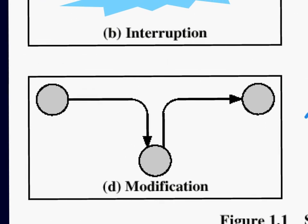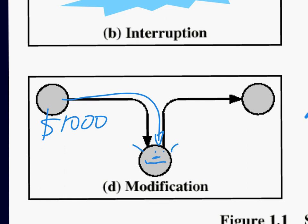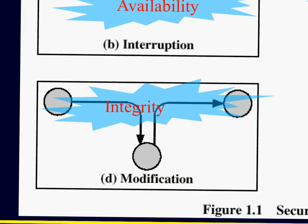What about another type of attack? I decide to pay $1,000 into an account, but Mr. Evil intercepts and changes it to $10,000. You're suddenly $9,000 out of money. That's a classic example of an integrity attack.